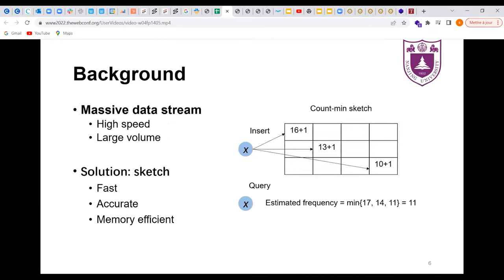Many probabilistic data structures, called sketches, have been widely accepted because they are fast, accurate, and memory efficient. For instance, count sketch is a classic sketch to estimate the frequencies of items.